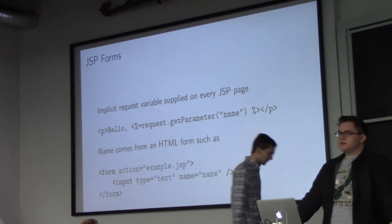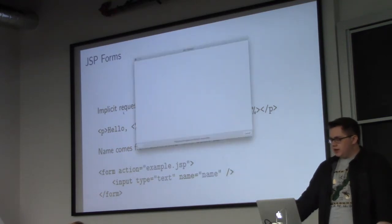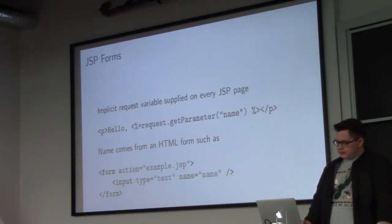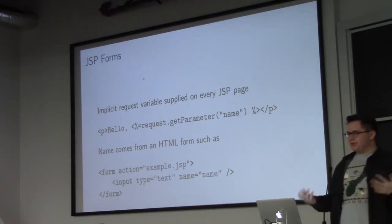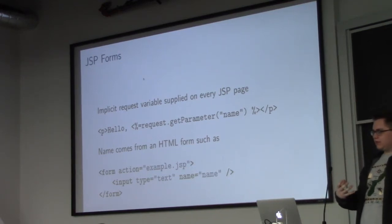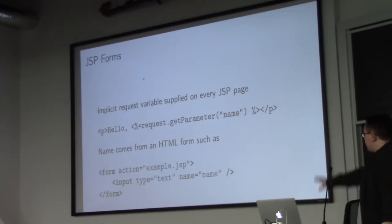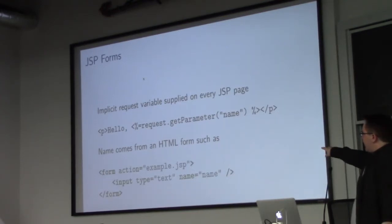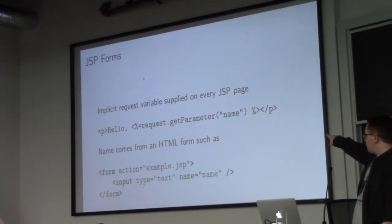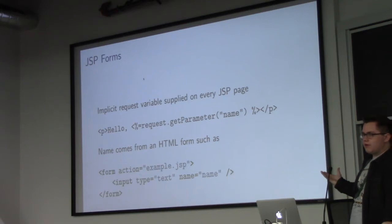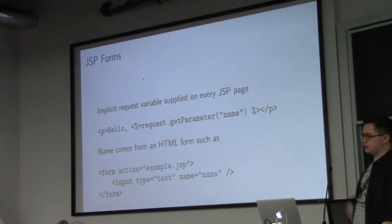One of the most important things in this project are going to be forms, because you want both input and output — things like logging in and logging out. When you create a form, there's an implicit request variable, and when the server receives this form, it can get all the values out of it. For example, you have a form in HTML and an action pointing to a JSP page. In that JSP page, you can call request.getParameter with whatever name you used — in this case 'name' — and it'll print it out. You can store it as a string in your Java code, or use the percent-equals to render it in your HTML.